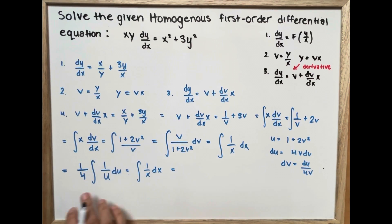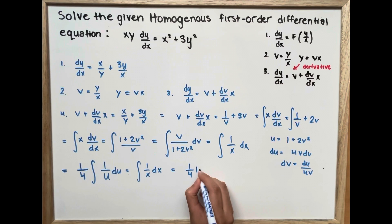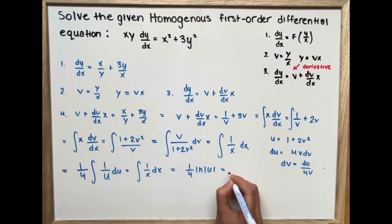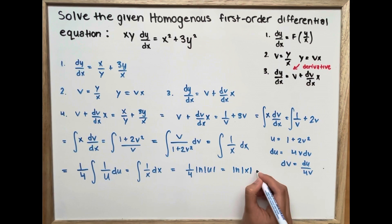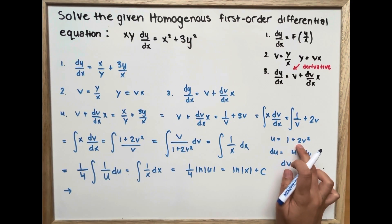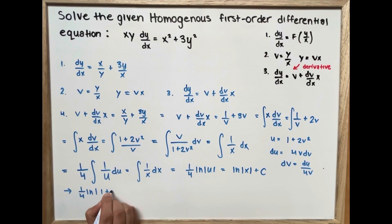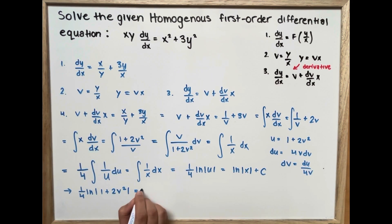This is a straightforward integral. We get one-fourth times ln of absolute value of u equals ln of absolute value of x plus c. Substituting u back as 1 plus 2v squared gives one-fourth times ln(1 plus 2v squared) equals ln|x| plus c.